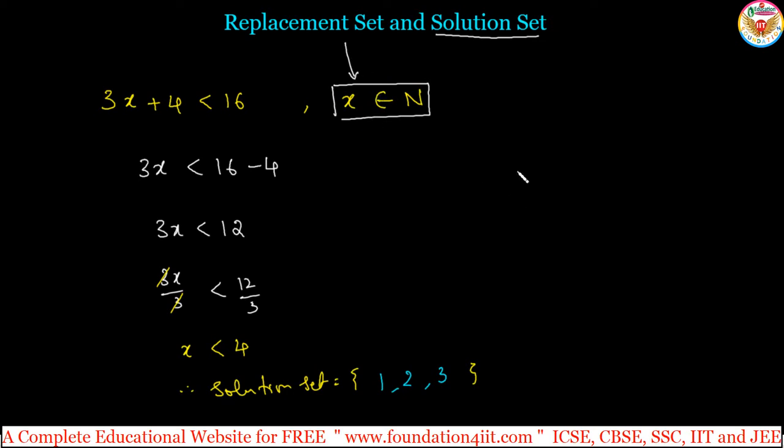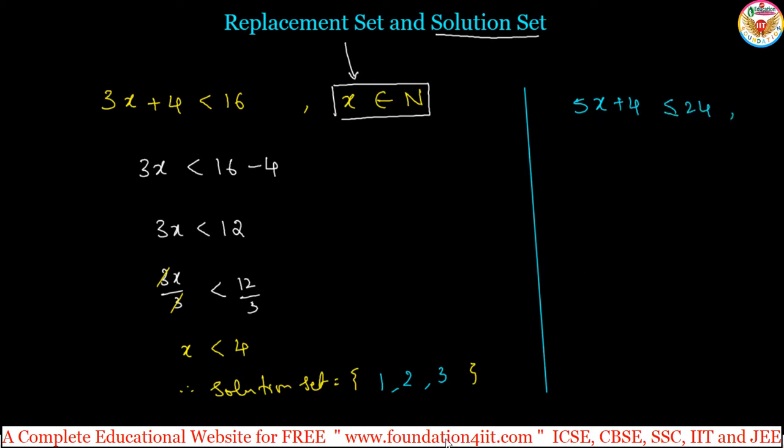Let us have one more question. x condition is given, so based on that we can take. Solve the linear equation 5x plus 4 less than or equal to 24. Let us take x belongs to whole numbers. So, you have to choose the solution set from the whole numbers. So, whole number is the replacement set.